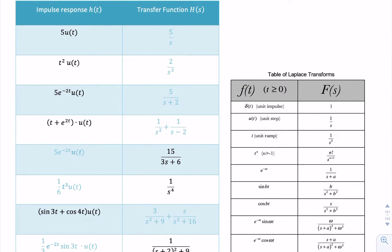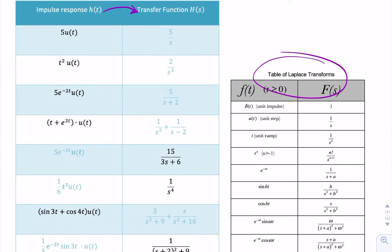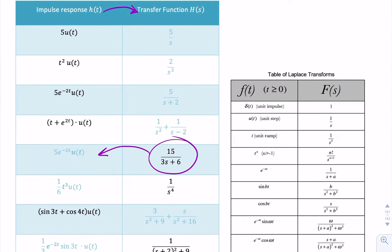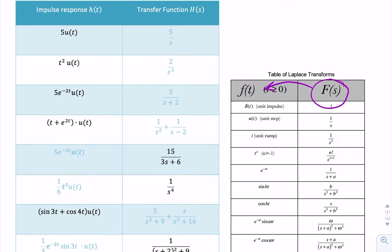Here we have a large number of systems with impulse responses and corresponding transfer functions. We are asked to find H(s) from H(t), which requires carrying out a Laplace transform or using a table. In some cases, we're given the transfer function and need to find the impulse response, which requires the inverse Laplace transform — taking us from the S domain to the time domain. We'll go through these one by one using the table.